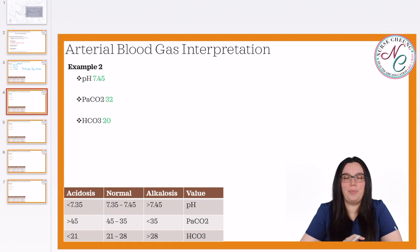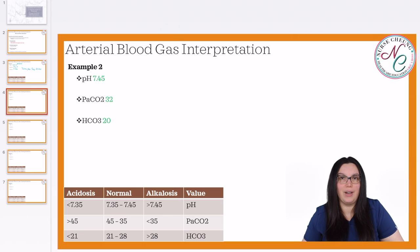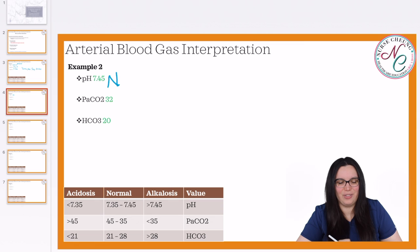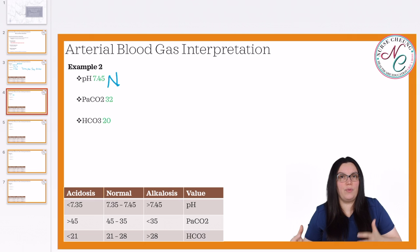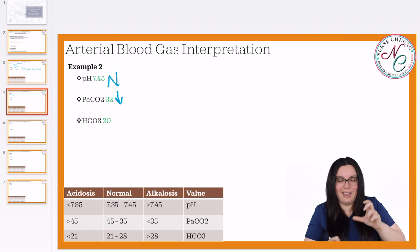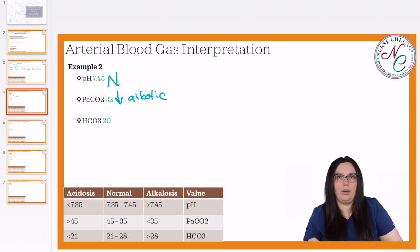In our next example, we have a pH of 7.45, a PaCO2 of 32, and an HCO3 of 20. As always, we begin by looking at our pH. We have a pH of 7.45 — that's actually neutral. Normal pH is between 7.35 to 7.45. Next, we take a look at our PaCO2. Normal is between 35 to 45. We've got a value of 32, which is actually low. So when it's not in that acidotic state, we're losing acid — we're in a more alkalotic state with the respiratory component of our ABG.